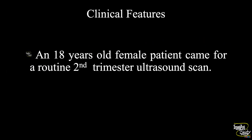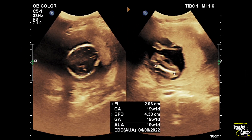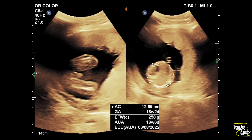An 18-year-old female patient came for a routine second trimester ultrasound scan. We have measured the gestational age according to biparietal diameter and femoral length — the gestational age is around 19 weeks, one day. We have measured the abdominal circumference also and the weight was around 250 grams, which is quite normal at this age.